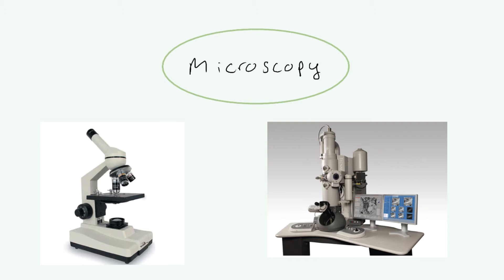Now there are different types of microscopes. On the left-hand side we have a light microscope, and on the right-hand side, which looks more complicated — and indeed it is — we have an electron microscope. In this video we're going to briefly discuss the differences between those two, and we're going to do some calculations which you need to be able to do for your exam, relating to image size versus the real size of something we're looking at.